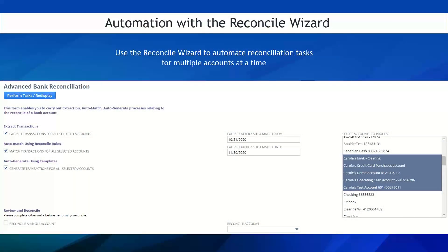Finally, I'd like to highlight our reconciliation wizard function, which is also well-liked by Nolan ABR users, as it helps automate all highlighted reconciliation tasks — extract, auto-match, and auto-generate — for multiple bank accounts at a time. ABR users can initiate all processes at once, go for coffee, and only have to focus on remaining unmatched items when they come back, helping them significantly reduce the amount of time spent on this tedious procedure.